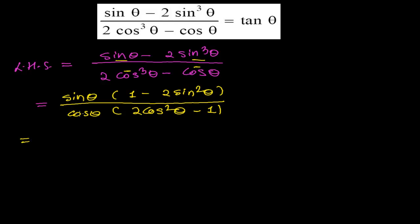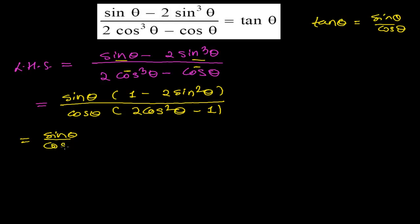Now I have sin θ and cos θ, and we know that tan θ equals sin θ upon cos θ. Since I have sin θ upon cos θ, I will separate this and write tan θ. So let me separate sin θ upon cos θ and write the rest separately.